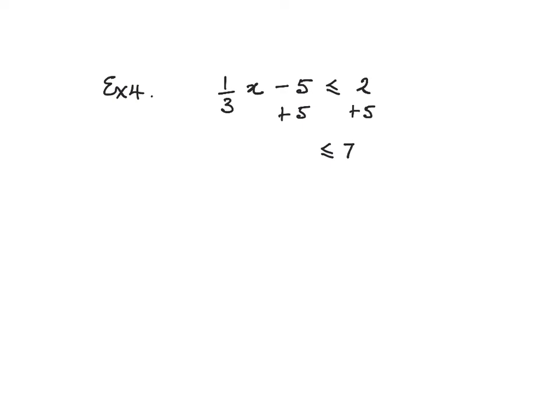That gives me a 7 and 1 third of x. Now how do I get rid of dividing by 3? I'm going to multiply by 3. The equation sign does not change, so it's 3 times 7 then, and x is less than or equal to 21.